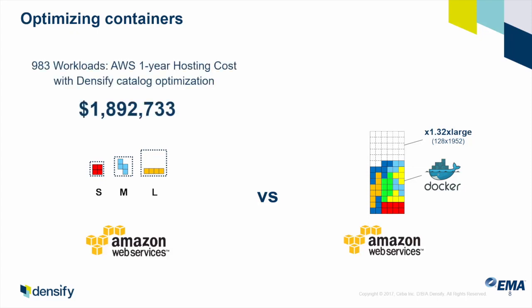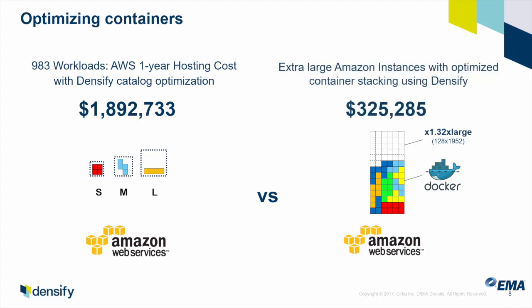To showcase this, we took just under 1,000 real workloads and said: if we put them in Amazon fully optimized — precisely sizing small, medium, and large instances — these 983 workloads cost about $1.9 million a year. Then we asked: what if they were running in Docker on very large Amazon x1 instances? It turns out that if we properly stack them using Densify's analytics engine, we could fit all of them in four x1s for about an 80% cost difference. Instead of buying small items of capacity, you can dovetail workloads and save a ton of money.